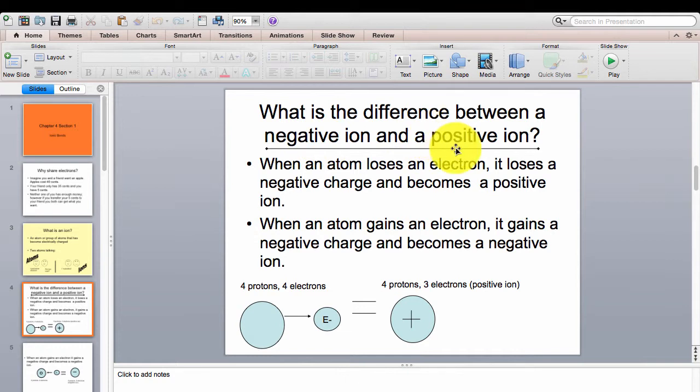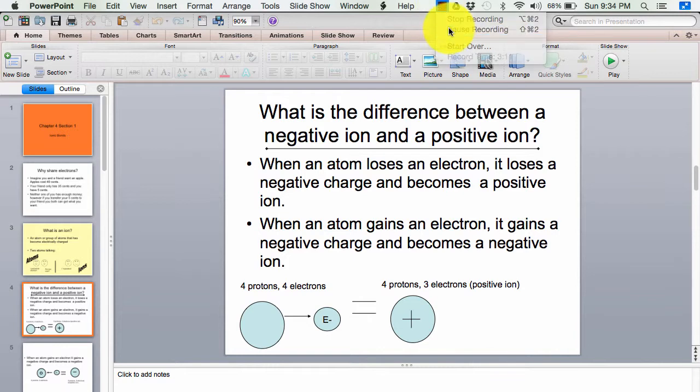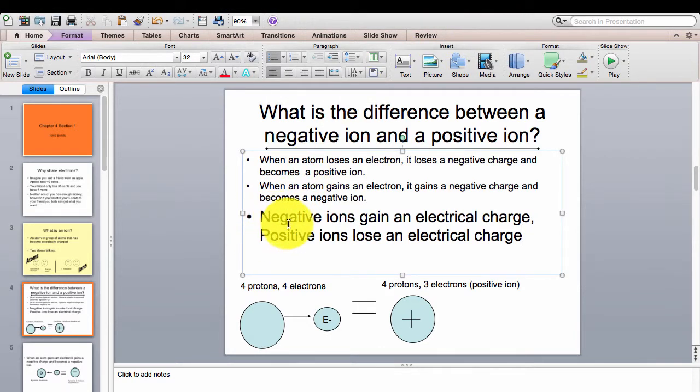The difference is that when an atom loses an electron, it loses a negative charge and becomes overall positive. If an atom takes on an extra electron, it gains a negative charge and becomes negative. Now what you should see is exactly what's in your notes. Write: negative ions gain an electrical charge. Remember, we're passing electrons, which are negative. So a negative ion gains an electrical charge, and a positive ion loses an electrical charge.